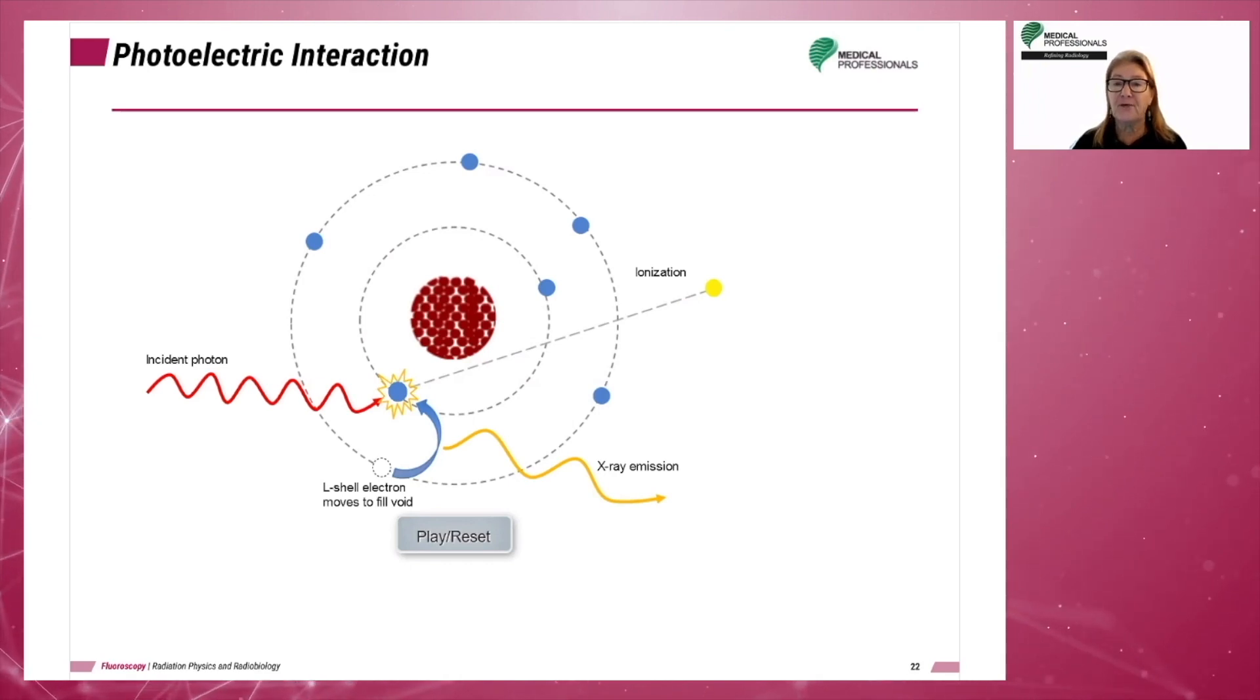This interaction results in the ejection of an electron, which means the atom has been ionized. The ejected electron is called a photoelectron. There is no scattered x-ray photon because the whole energy of the x-ray photon has been lost. The photoelectric effect most commonly occurs at energy levels between 50 and 70 kV p.